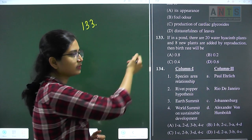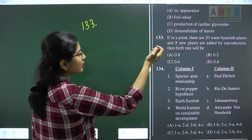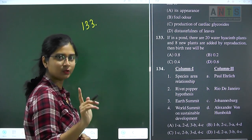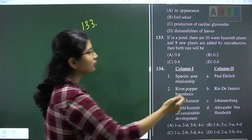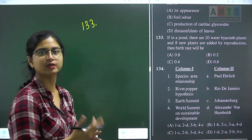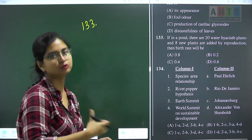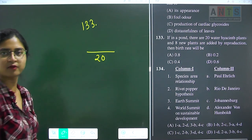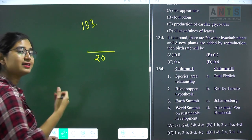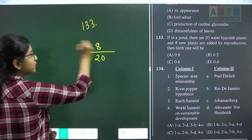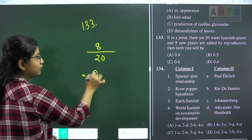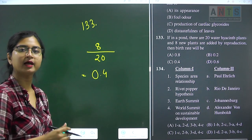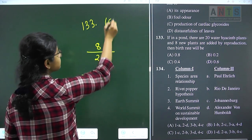Question 133 is a numerical question. If there are 20 water hyacinth plants in a pond and 8 new plants are added by reproduction over a unit time period, the birth rate is calculated as: number of plants added divided by initial number = 8/20 = 0.4. Question 133 answer is option C, 0.4.